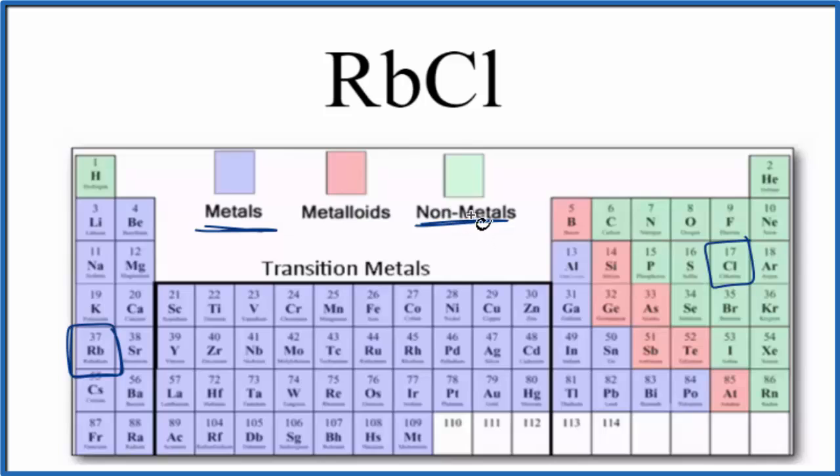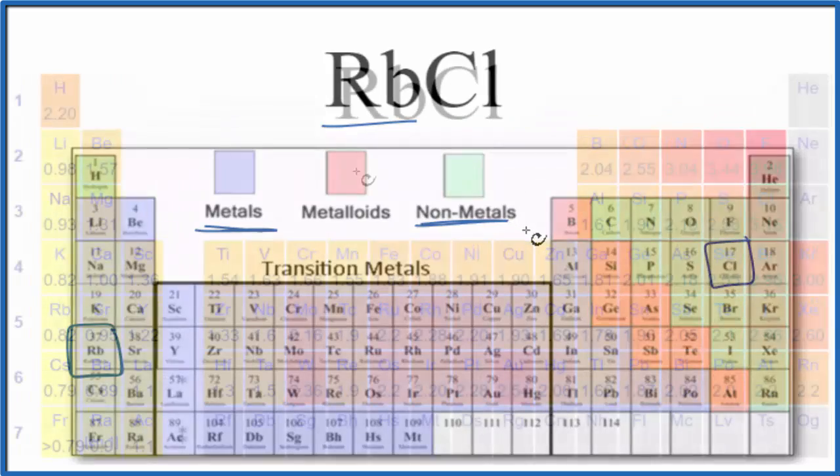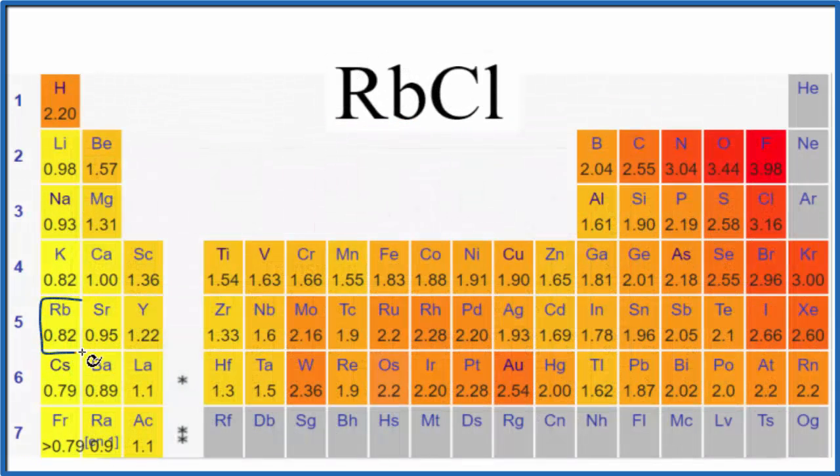We should check the difference in electronegativity between the Rb and the Cl, though, just to make sure. So rubidium right here, 0.82, and then chlorine way over here, 3.16.